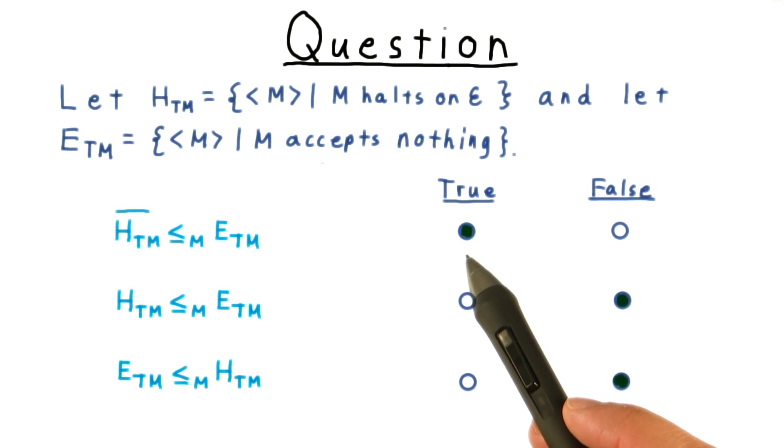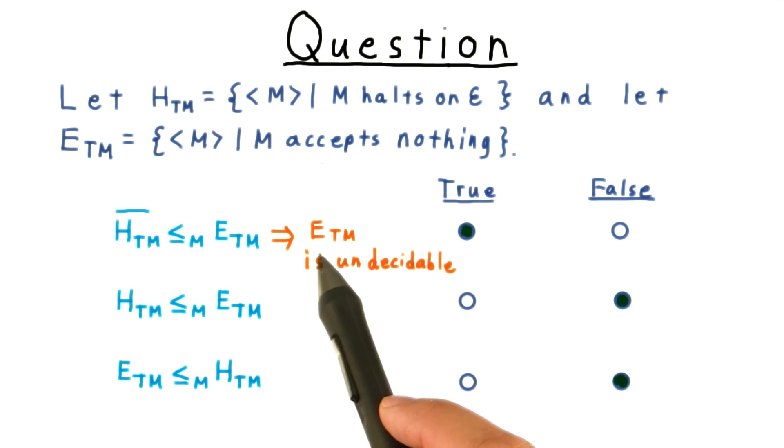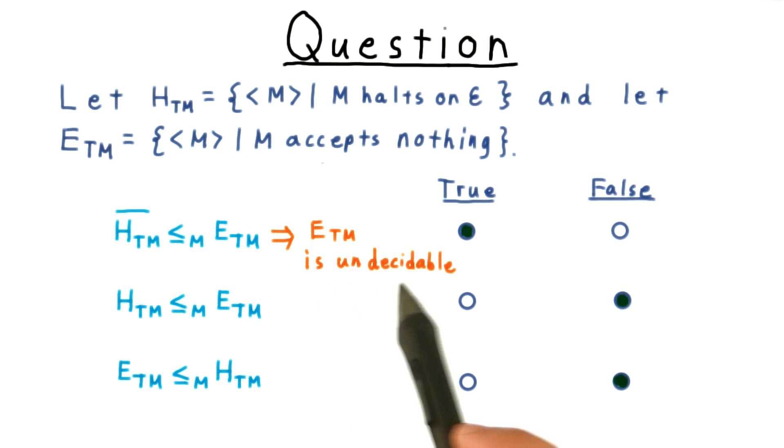The answer is that only this first statement is true, and it shows that the empty problem is undecidable. The reduction is straightforward. The output machine just runs the input machine on the empty string, and if it halts, it accepts.